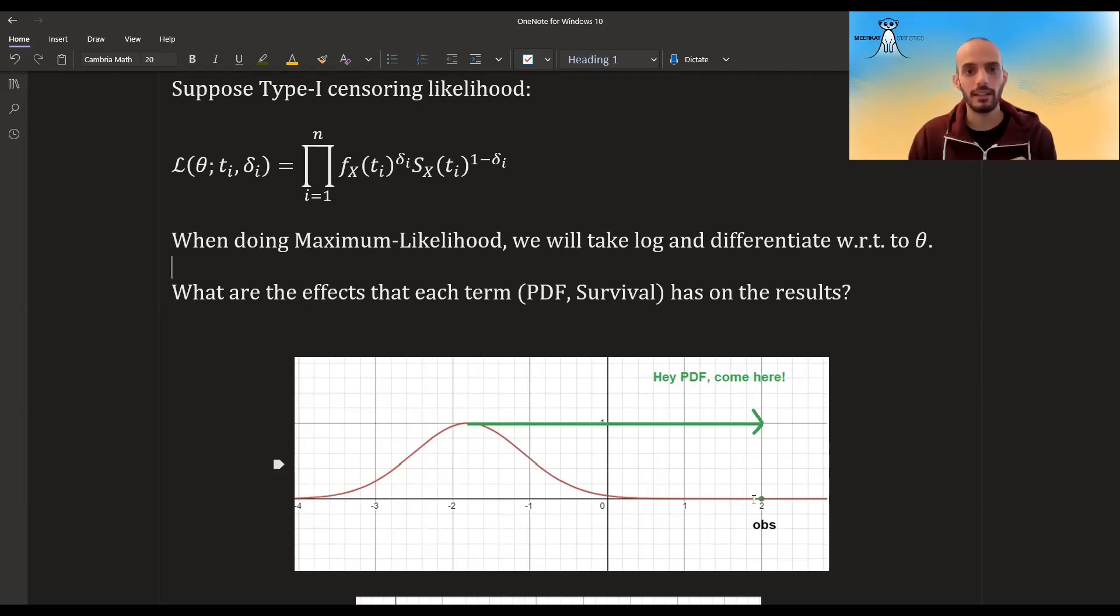Then this point is kind of like calling the distribution to come over there. It's saying, hey, come over here, and what it will do, it will try to change the mean parameter to come to it.